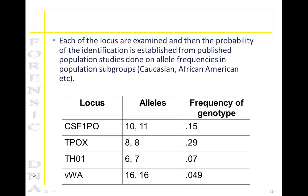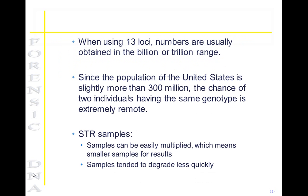Each locus is examined and then the probability of identification is established from published population studies. Looking at a four-locus example, the probability would be 0.15 × 0.29 × 0.07 × 0.049, which would give us one person in 6,666 individuals having this combination of alleles at this loci. When using 13 loci, the statistical numbers obtained are usually in the billion or trillion range. Since the population of the United States is slightly more than 300 million, the chance of two individuals having the same genotypes at the 13 loci is extremely remote.